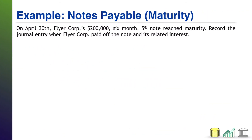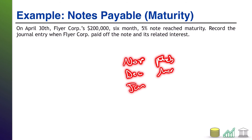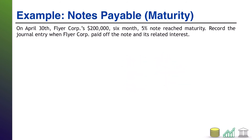Fast forward to April 30th — this is when the six-month note reaches maturity. November, December, January, February, March, and April — there's your six months. At this point we must pay off both the interest and the principal on the note. On April 30th we're definitely paying a bunch of cash, so we'll have a credit to cash. We know we're paying off $200,000 in principal plus some interest, so let's figure out all the things we're paying off, sum them up, and that will tell us the total cash we need to pay.